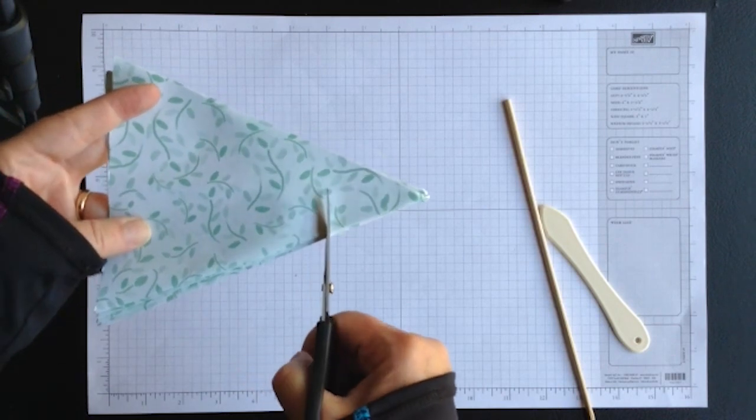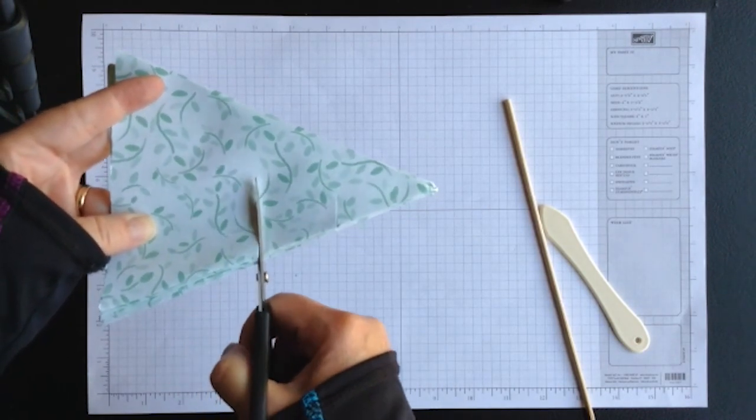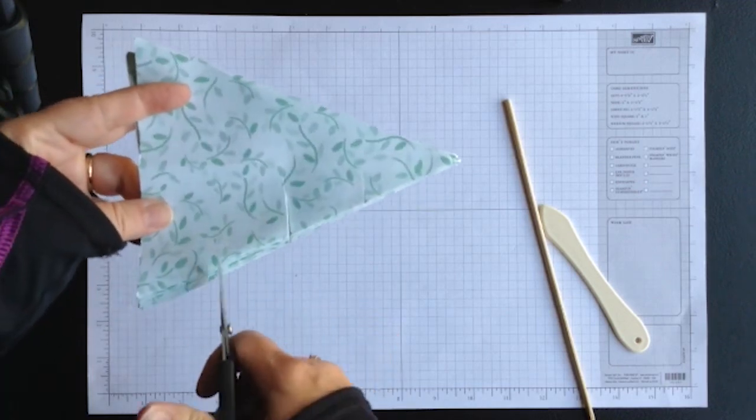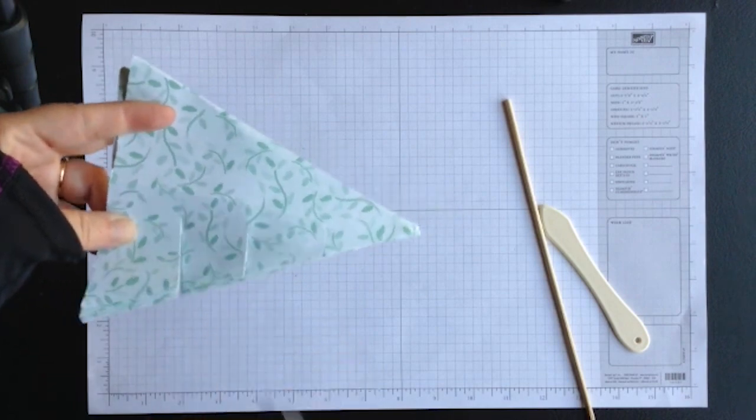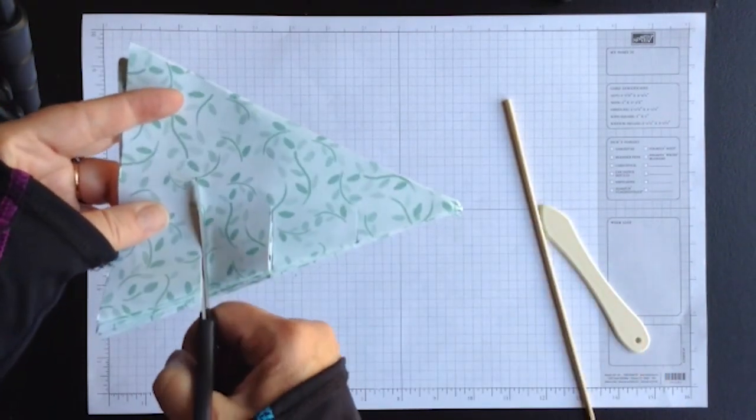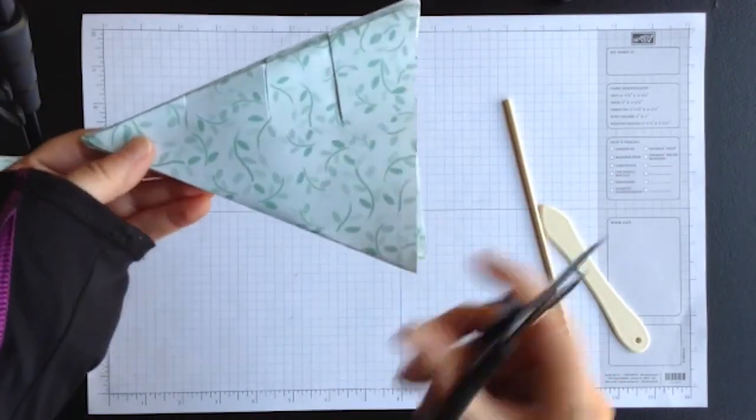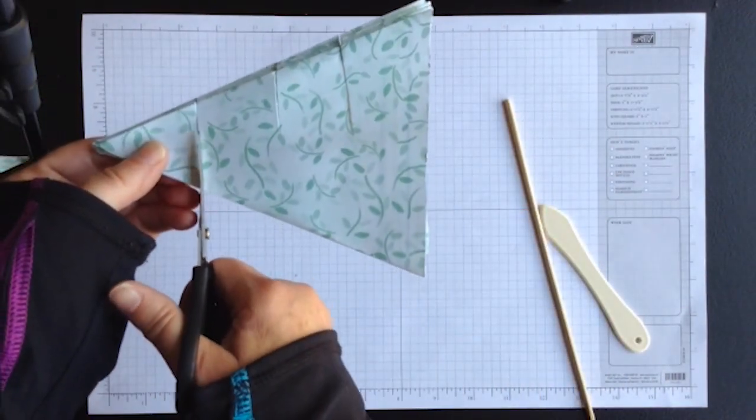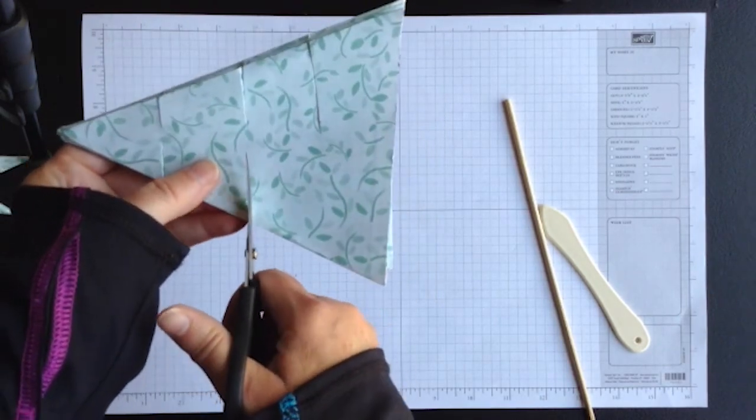So these lines are cut so they're parallel to each other. Flip it over and you're going to make three identical cuts on the opposite side, mirroring the cuts.